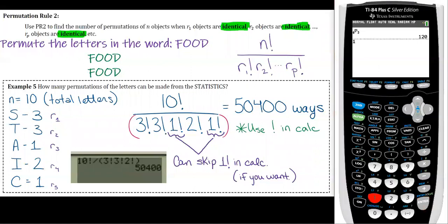Okay, so you'll type 10 and then we need the factorial key. So again, you go to math, go over to probability, and then it's the fourth one down. And then you can do your divides.